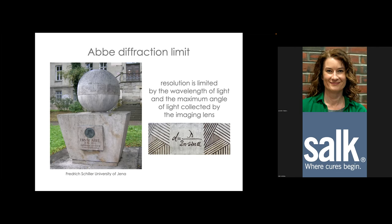In fluorescence, we illuminate with a different wavelength than we image, so it's the wavelength of light forming the image that matters. The maximum angle of light the lens can collect also plays a role, and there's an equation describing this that we'll get back to.